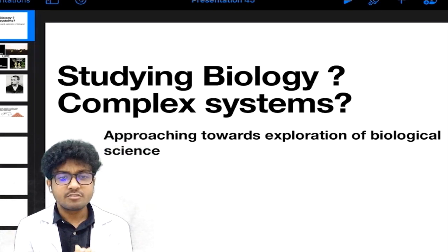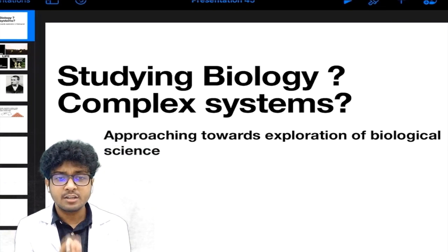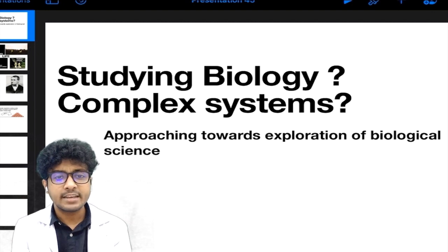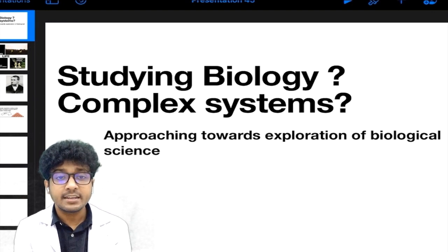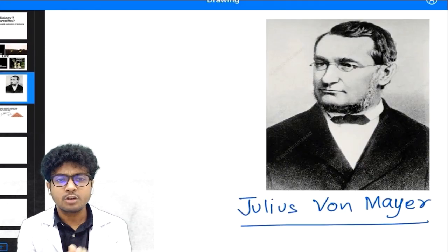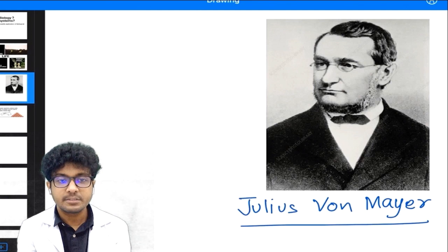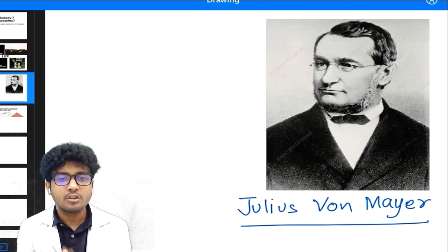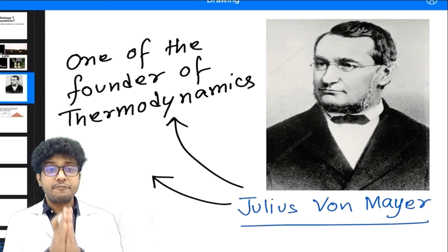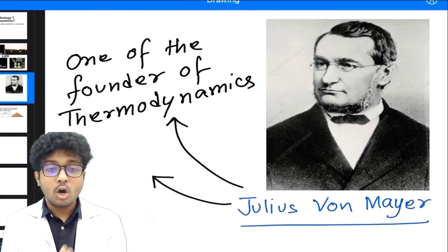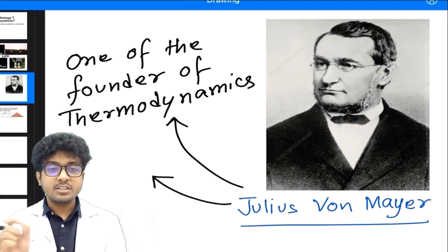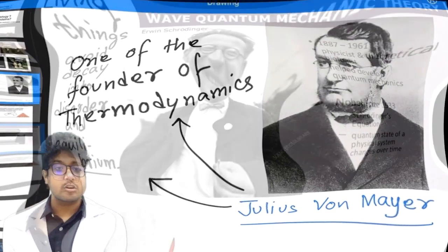There was a very interesting relationship between physics and biology from very early days. A German doctor, Julius von Mayer, is one of the founders of the first law of thermodynamics — the energy conservation principle — that energy can neither be created nor destroyed. He was also the first person to describe oxidation as a primary source of energy in living organisms.